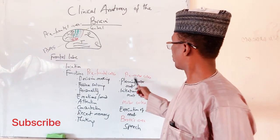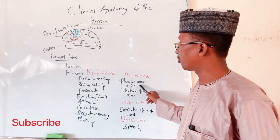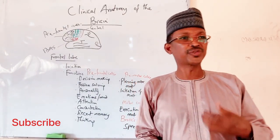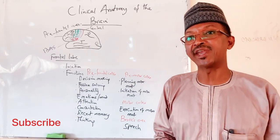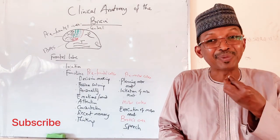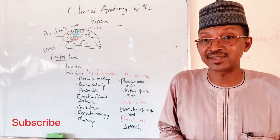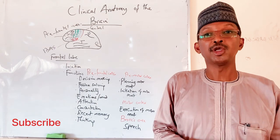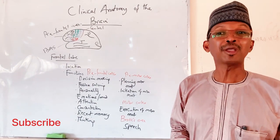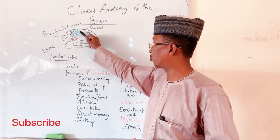The pre-motor cortex, lying directly anterior to the primary motor cortex, is responsible for planning and initiation of voluntary motor movement. For example, thinking that you want to stand up and go to a biochemistry lecture — that planning and initiation is the pre-motor cortex's job. The actual execution of the movement once you start walking is the function of the primary motor cortex.